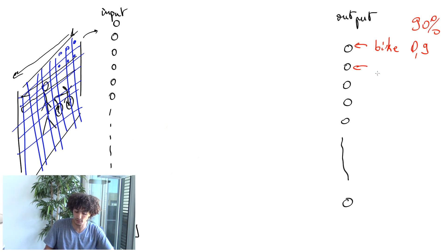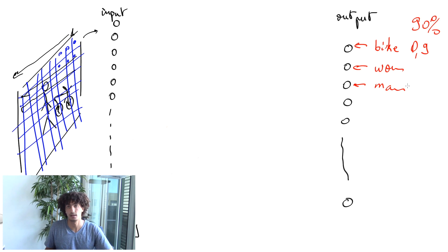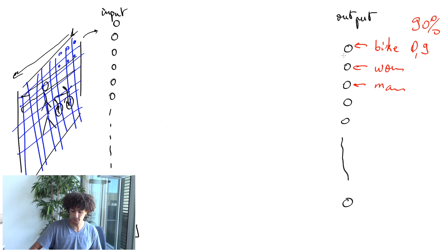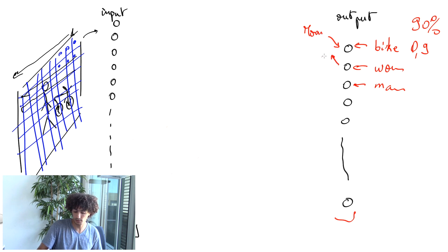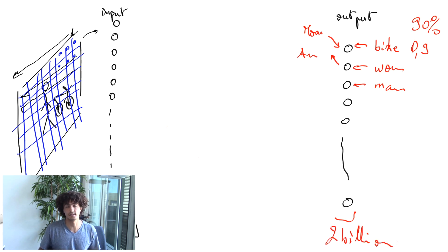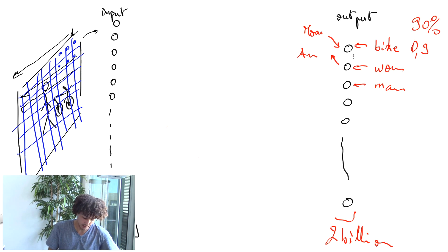Of course, this is oversimplified. You can have, for example, outputs for bike, women, men, et cetera. And if you go back to the example of Facebook's tagging system, this can be the list of Facebook users — so the first node would tell you Morgan Freeman, the second node Arnold Schwarzenegger, and then you'd have 2.2 billion possible answers. So we want to map those inputs to some useful outputs, telling us what is in an image.